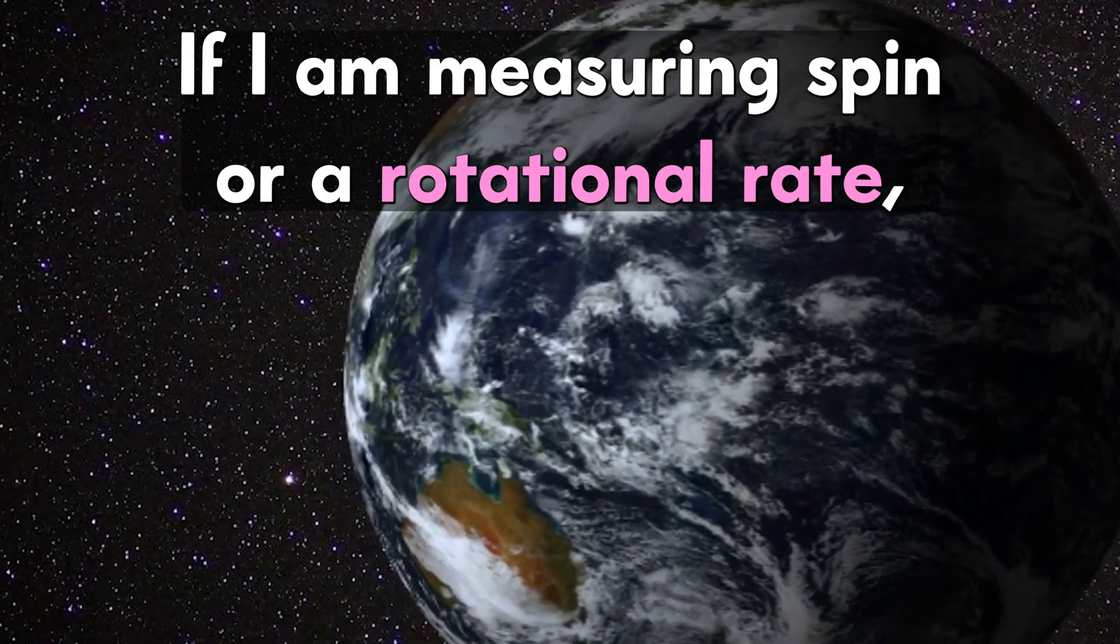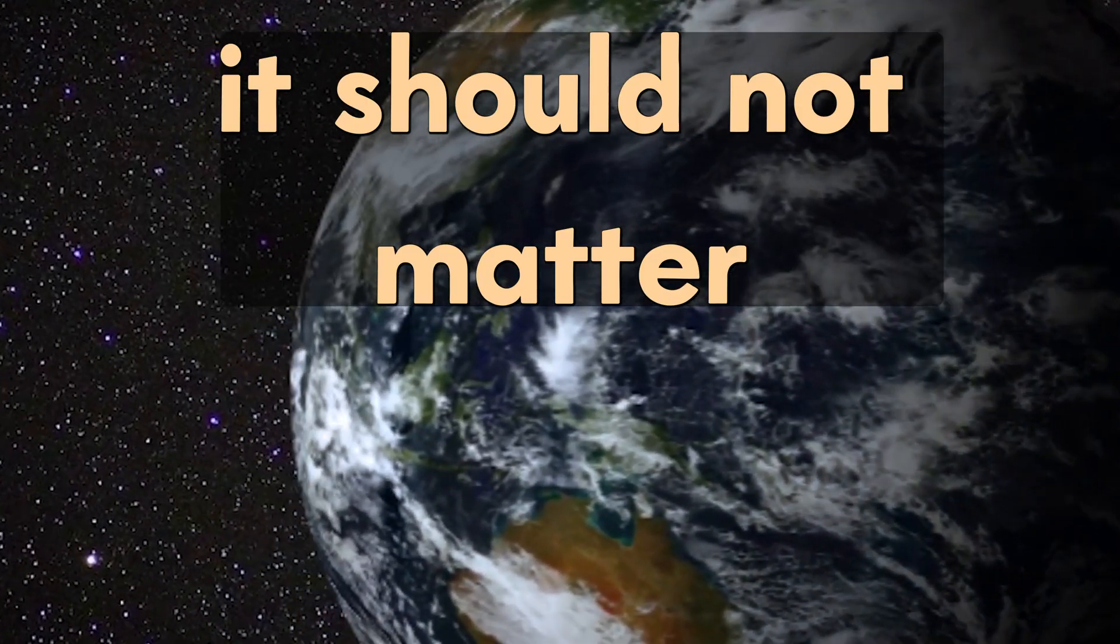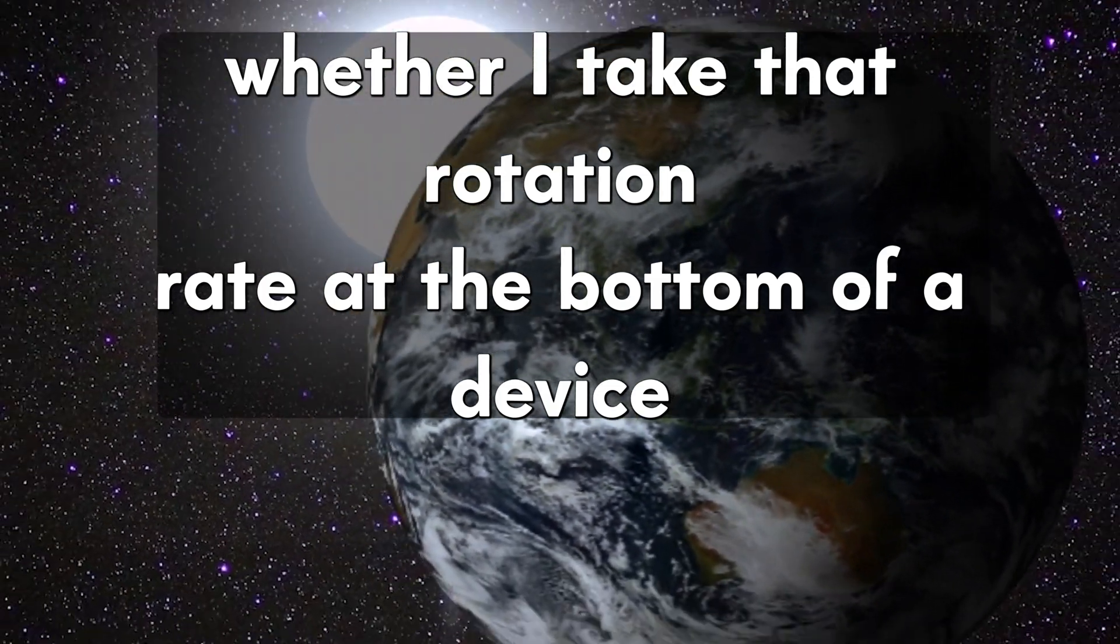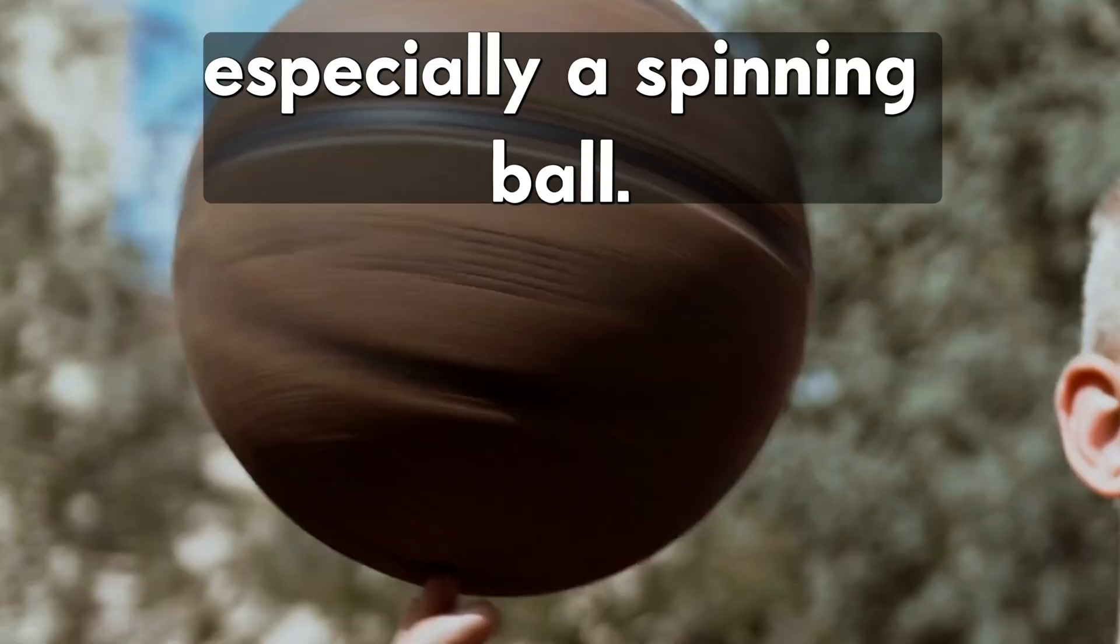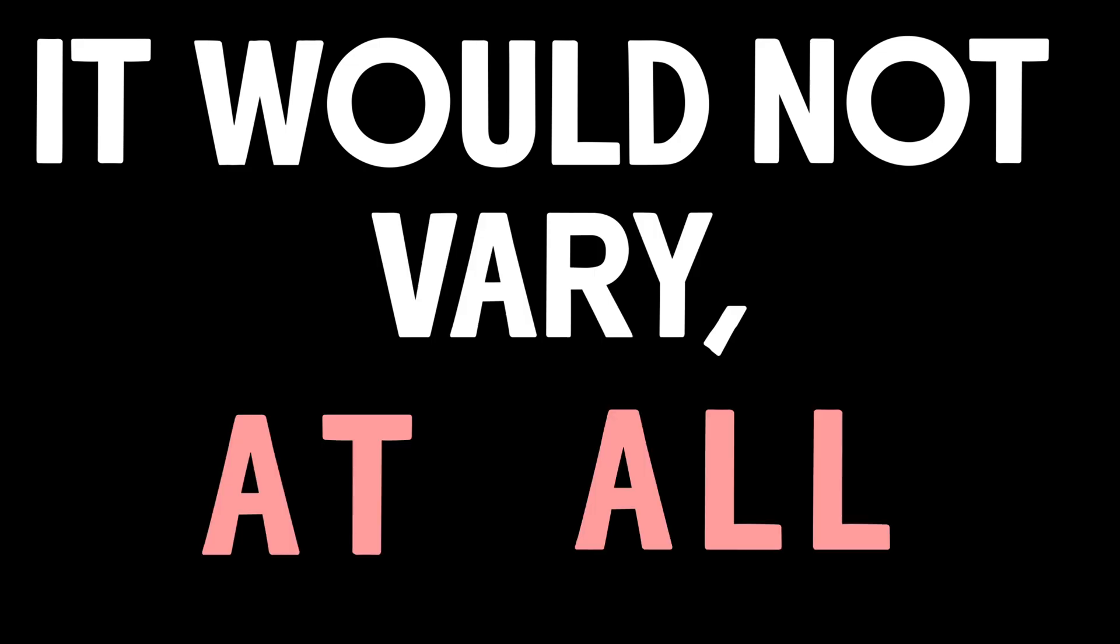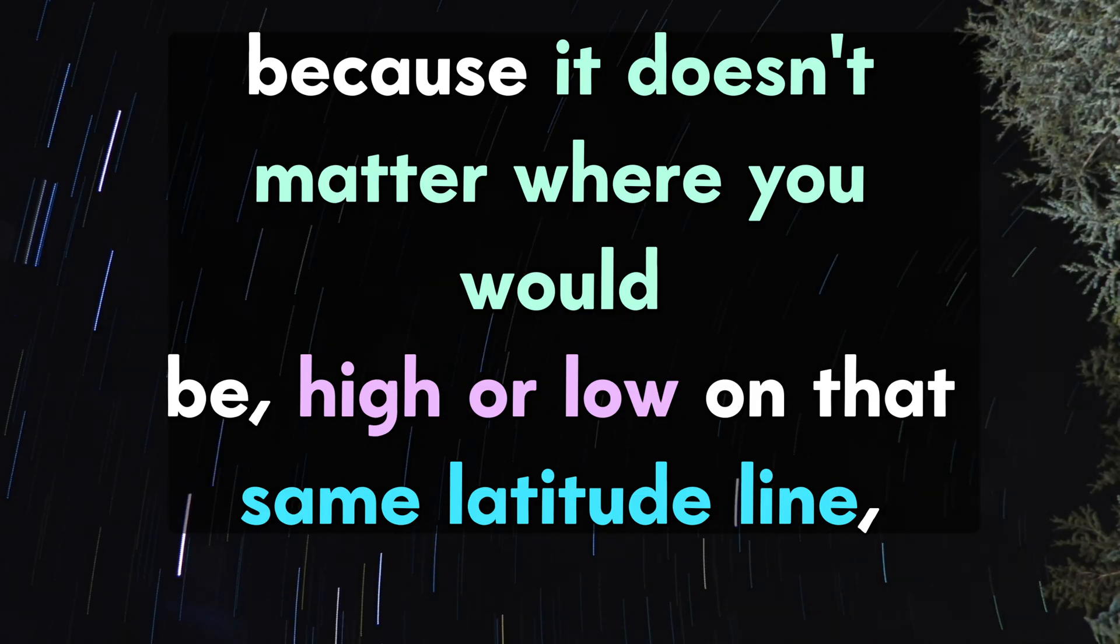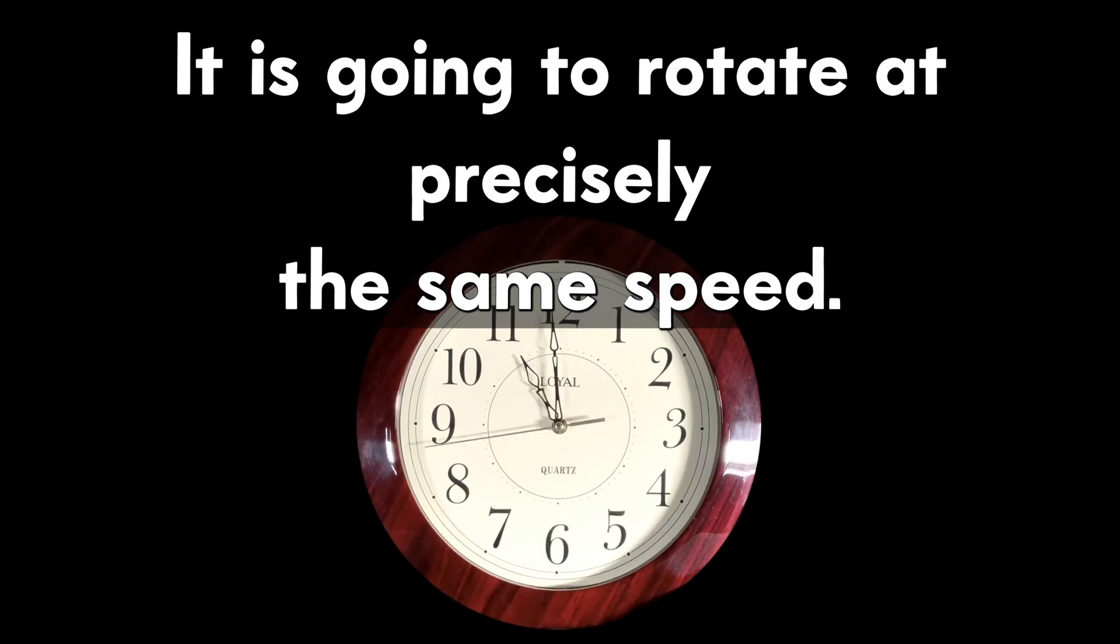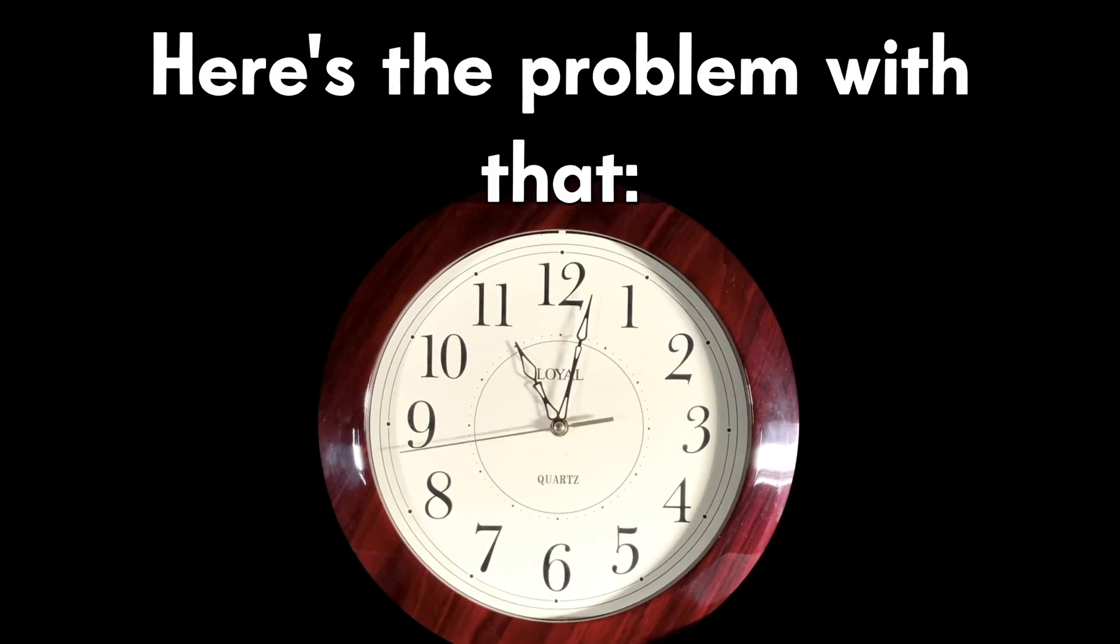If I am measuring spin or a rotational rate, it should not matter whether I take that rotation rate at the bottom of a device or at the top of a device, especially a spinning ball. It would be the same whether you took it right on the globe or an inch above the globe. It would not vary at all because it doesn't matter where you would be high or low on that same latitude line. It is going to rotate at precisely the same speed.